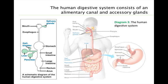Now we see a schematic representation of what was just explained. Try and remember the basic components of the human digestive tract: the mouth, esophagus, stomach, small and large intestines, the rectum, and lastly, the anus.